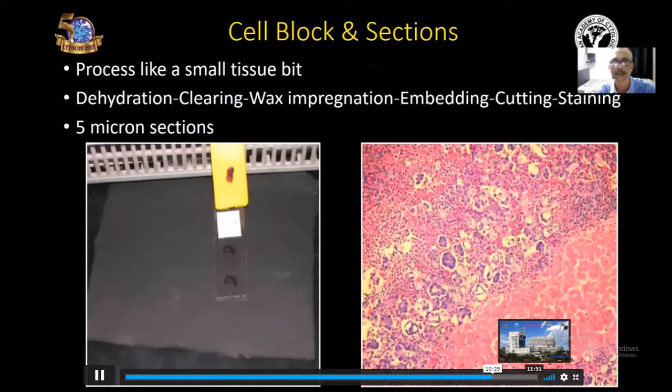Five micron sections are cut from the cell block. Here you can see how the cell block will look like and this is the sections cut and stained slide and this is the microscopic feature of the cell block sections.